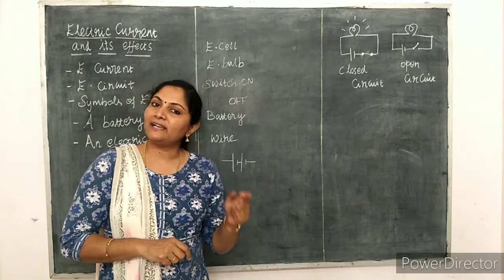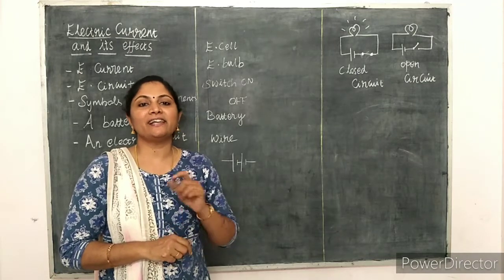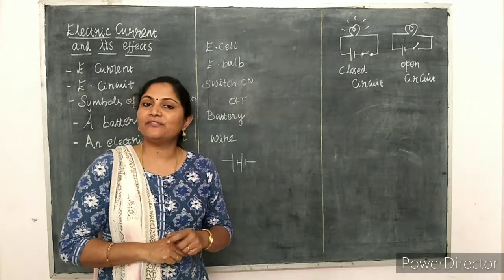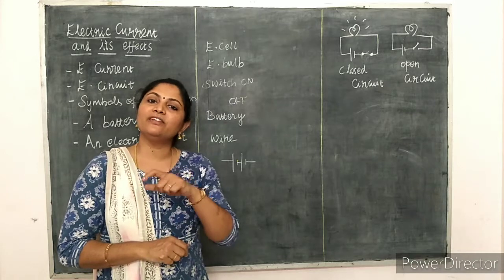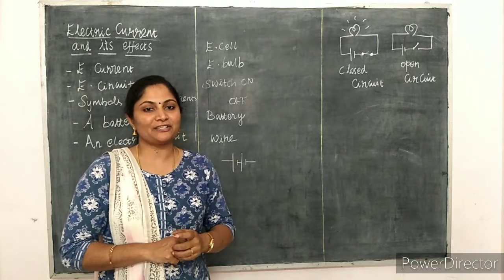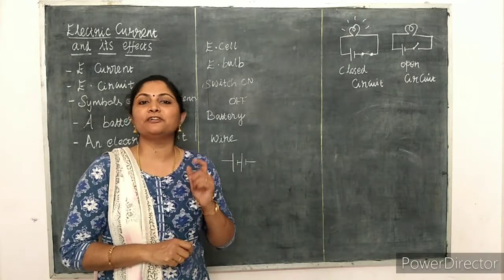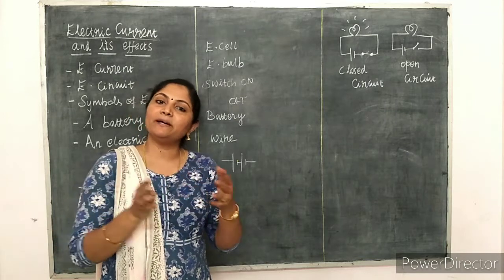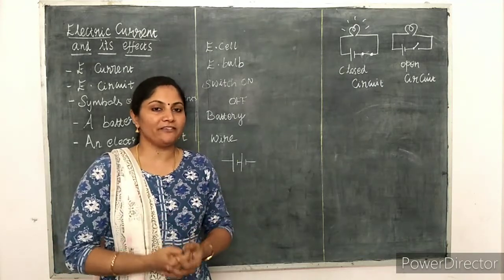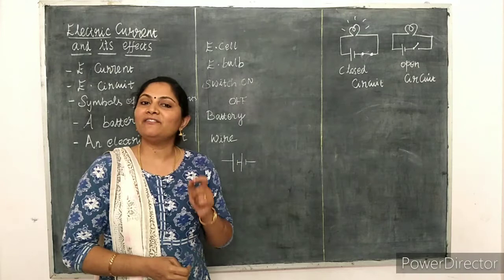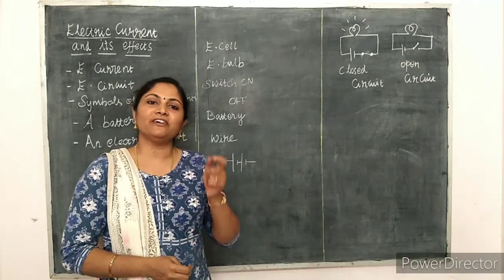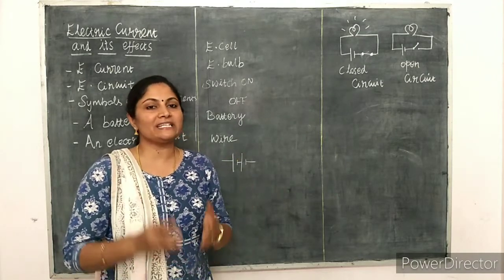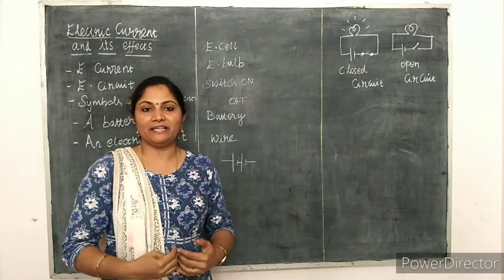In copper and aluminium materials, there are free electrons. Those free electrons will flow in a particular direction, which is said to be current. These electrons can flow in a particular direction only with the help of a source of electric energy, which is called a cell or battery.